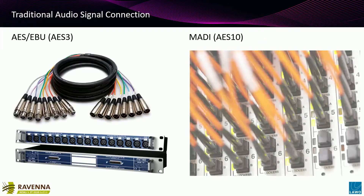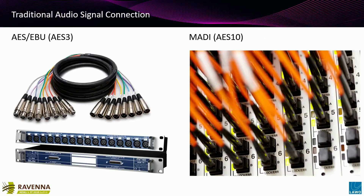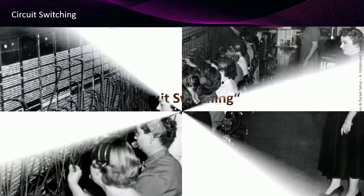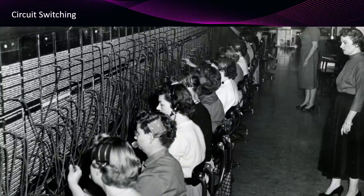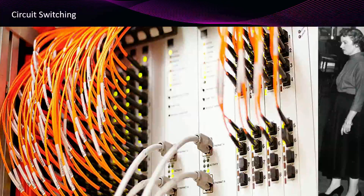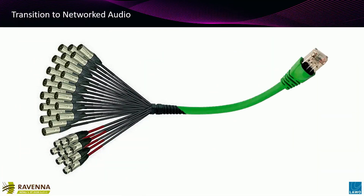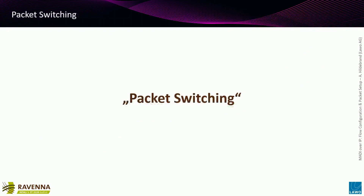How does traditional audio distribution look? We have AES-EBU, AES-3 digital signals - not talking about analog - we still have that. We have MADI on fiber or copper, and the way we connect this is called circuit switching. These days we use devices replacing the switchboard, with electronics making sure signals reach their destination. But we want to transit from digital audio distribution into RJ45, into a network - what we call packet switching.